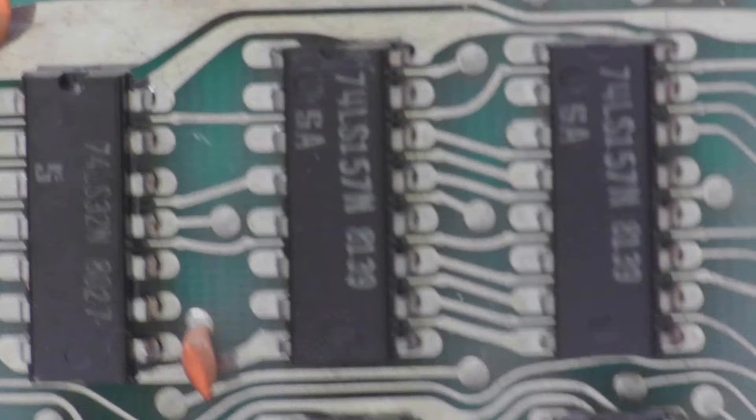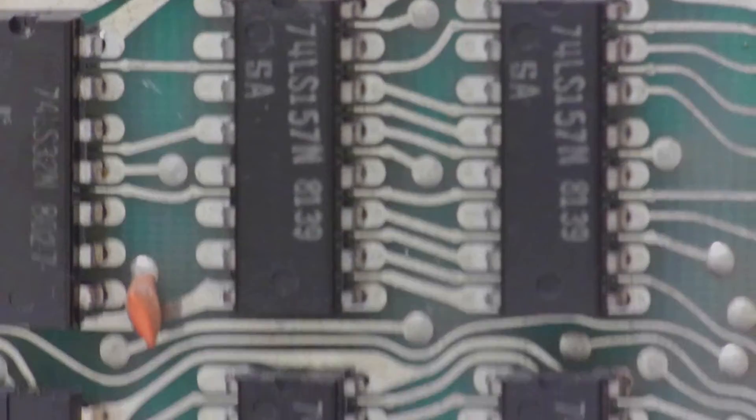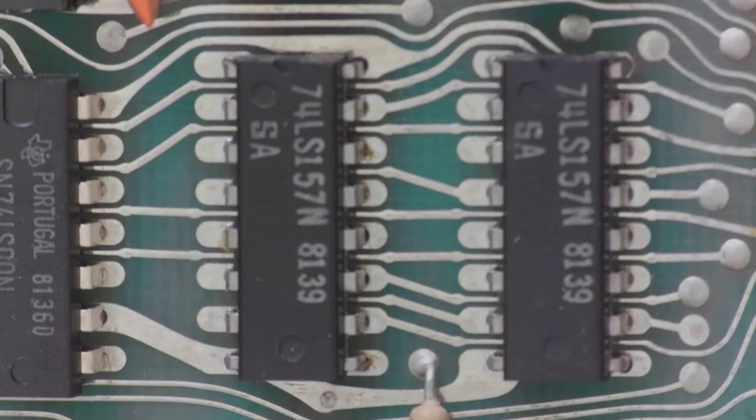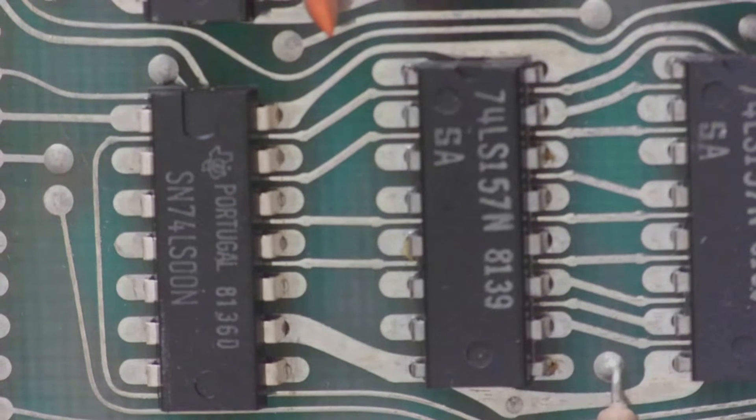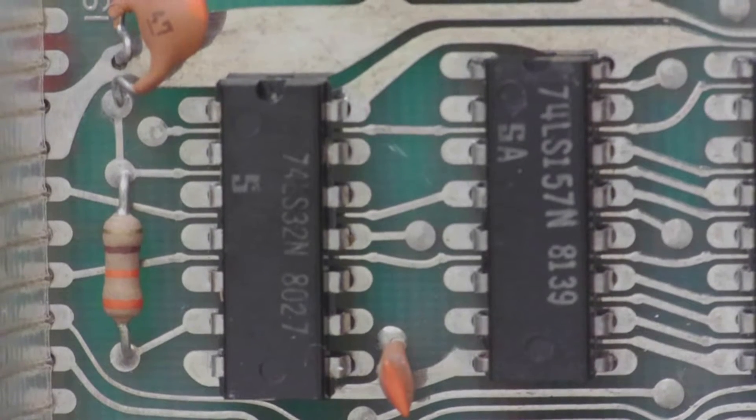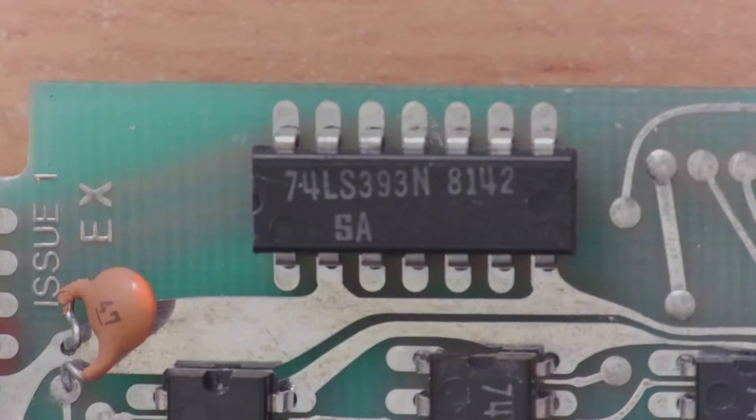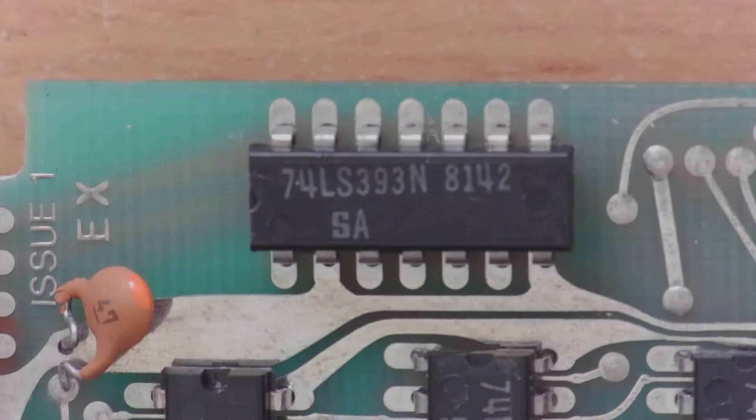On the second board, there are seven of these 7400 series logic chips. This is interesting, because four of them are 74LS157s, which we found in the ZX80. The 74LS00 is a quad dual input NAND gate, while the 74LS32 is the OR gate equivalent. But what's this? A 74LS393? What's that doing here?